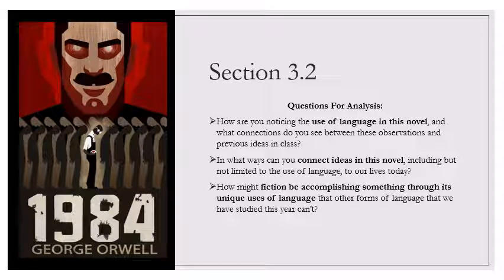In the end, the nagging voices broke him down more completely than the boots and fists of the guards. He became simply a mouth that uttered, a hand that signed whatever was demanded of him. His sole concern was to find out what they wanted him to confess and then confess it quickly before the bullying started anew. He confessed to the assassination of eminent party members, the distribution of seditious pamphlets, embezzlement of public funds, sale of military secrets, sabotage of every kind. He confessed that he had been a spy in the pay of the East Asian government as far back as 1968. He confessed that he was a religious believer, an admirer of capitalism, and a sexual pervert. He confessed that he had murdered his wife, although he knew, and his questioners must have known, that his wife was still alive. He confessed that for years he had been in personal touch with Goldstein and had been a member of an underground organization which had included almost every human being he had ever known.